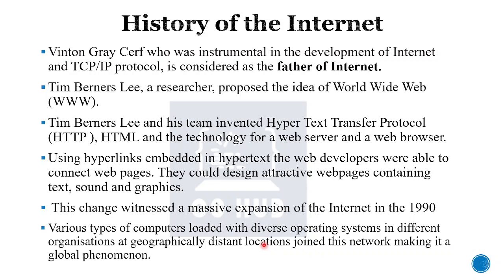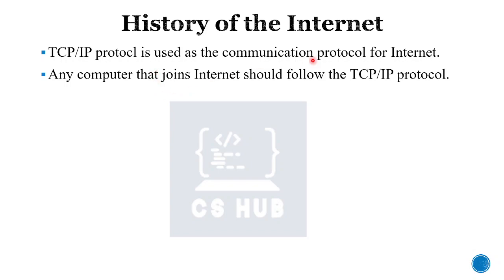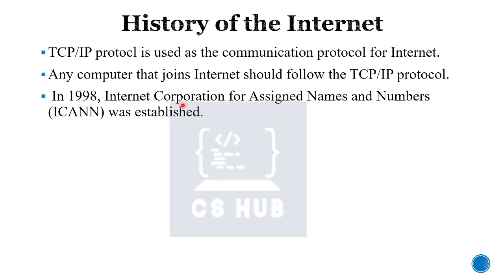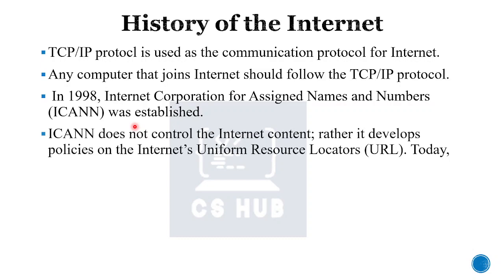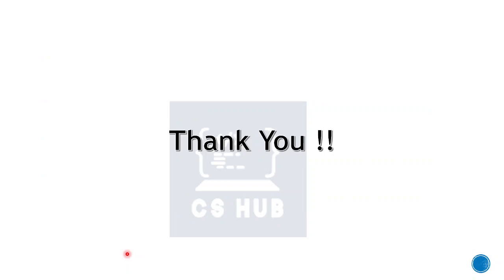TCP/IP protocol is used as the communication protocol for the internet — Transmission Control Protocol and Internet Protocol. Any computer that joins the internet must follow this protocol. In 1998, ICANN — Internet Corporation for Assigned Names and Numbers — was established. ICANN does not control internet content; rather, it develops policies on the internet's URL (Uniform Resource Locator). Today, the internet is the largest public network connecting billions of computers worldwide, providing services such as searching, email, file transfer, social networking, and more. It is the largest WAN.